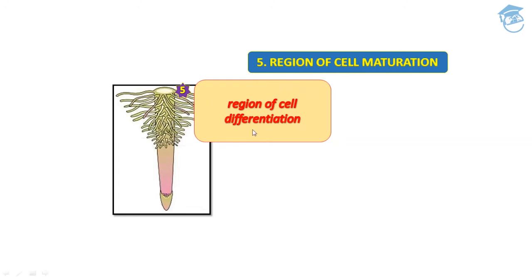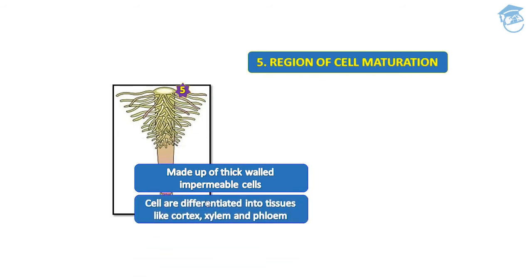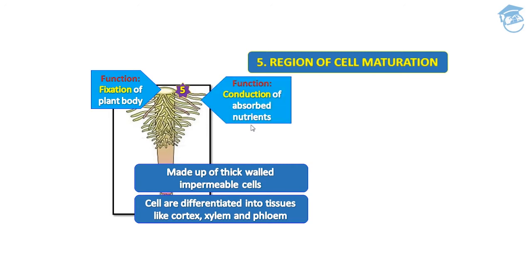The fifth region is the region of cell maturation — it is the region of cell differentiation where cells get differentiated and thus mature. They are made up of thick-walled, impermeable cells, meaning these cells won't allow anything to pass in or out. Cells are differentiated into tissues like cortex, xylem, and phloem. The functions of this region are fixation of the plant body — it helps in anchorage — and conduction of absorbed nutrients.